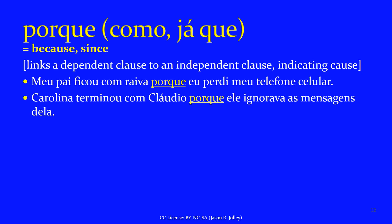Our first subordinating conjunction is PORQUE — also seen as COMO or JÁ QUE — which links a dependent clause to an independent clause indicating cause. 'Meu pai ficou com raiva porque eu perdi meu telefone celular' — my dad got mad because I lost my cell phone. Notice that 'because I lost my cell phone' is a dependent clause that cannot stand on its own. 'Carolina terminou com Claudio porque ele ignorava as mensagens dela' — because he ignored her messages is not a complete sentence — it's a dependent clause. Therefore, PORQUE here is a subordinating conjunction.